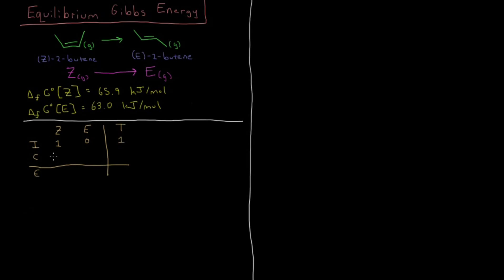Throughout the course of the reaction, the extent of reaction tells us that the change in Z will be minus ξ, and minus ξ moles will produce positive ξ values of E. The change in total number of moles is minus ξ plus ξ, which is 0. Then the equilibrium value for moles of Z is 1 minus ξ, for E is ξ, and the total number of moles remains constant at 1.